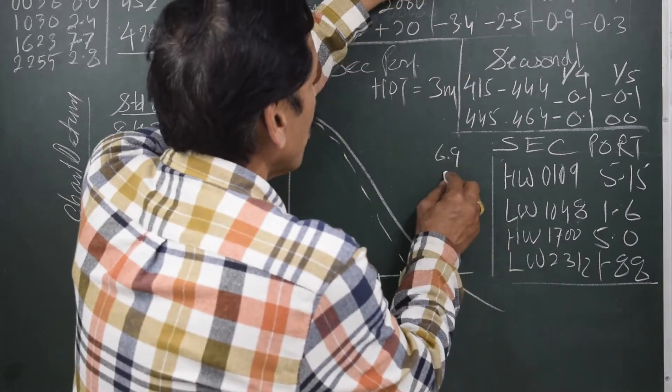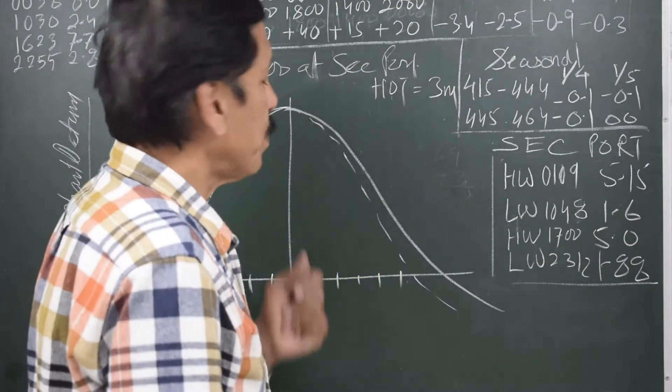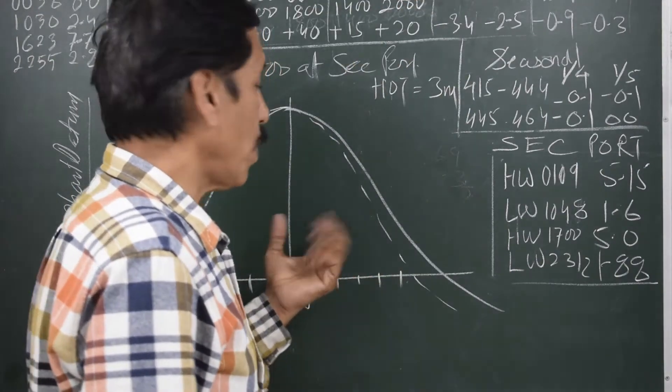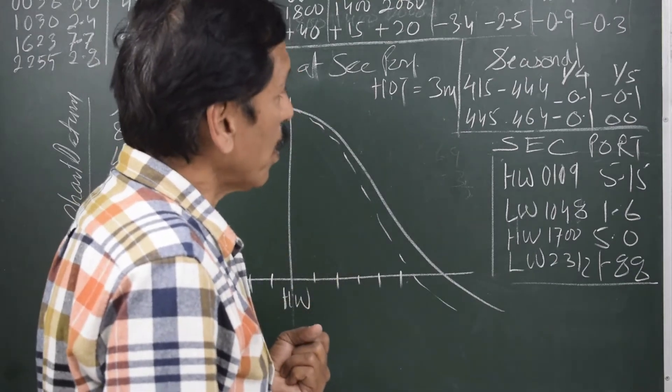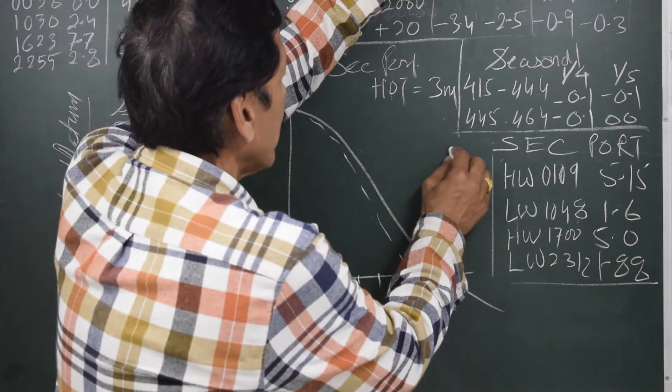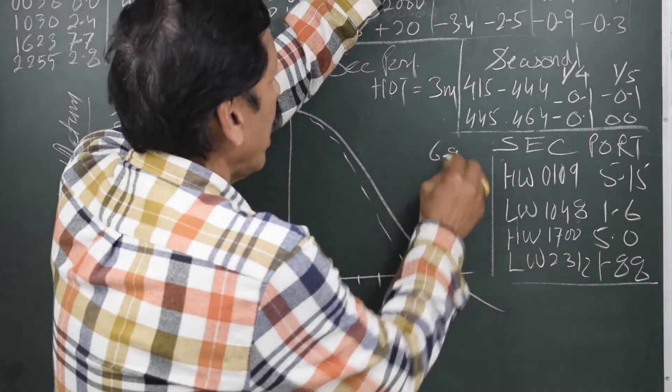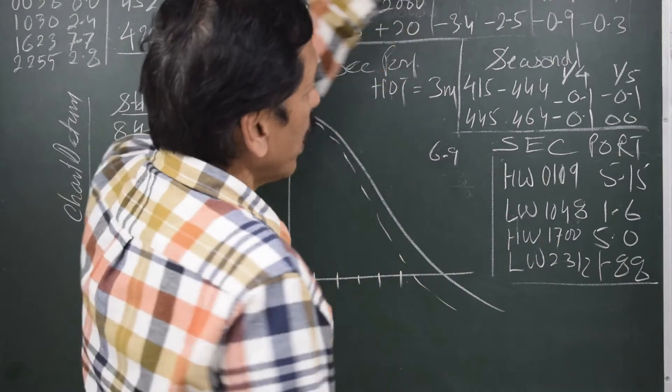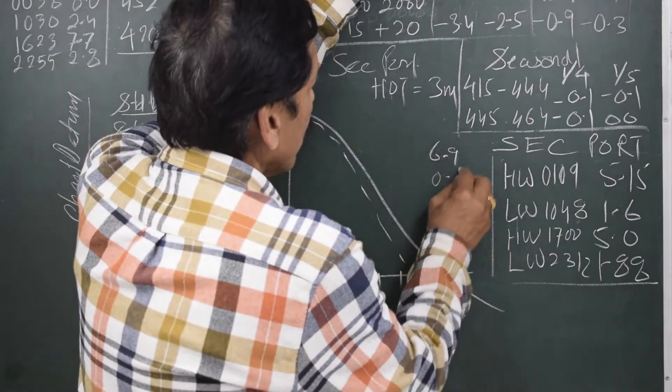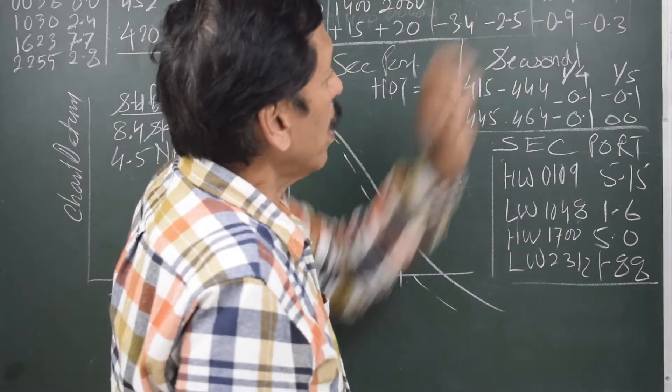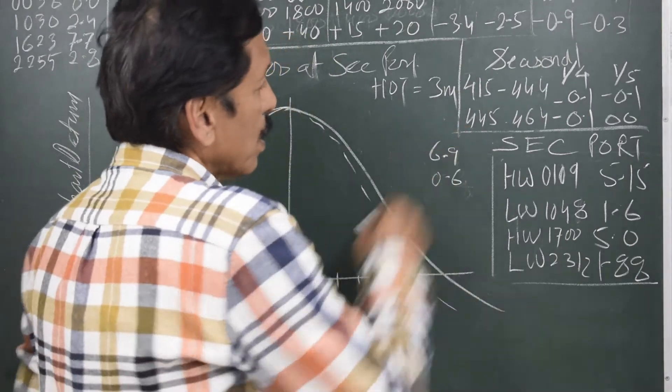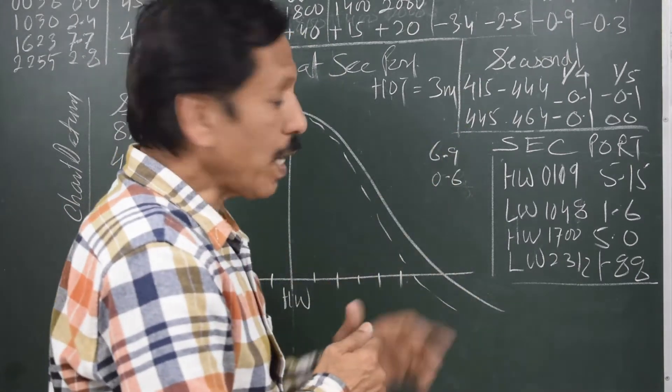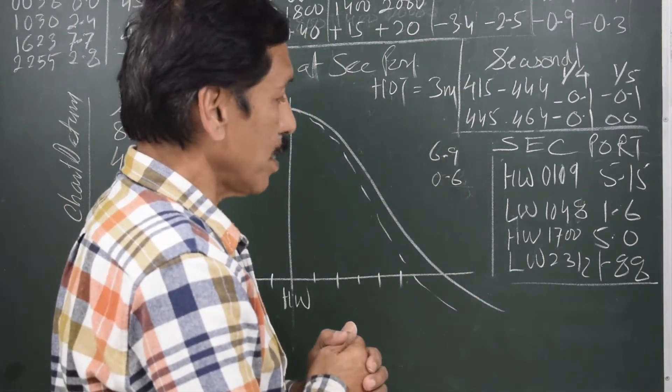But since we are going to use this curve for the secondary port, at secondary port mean high water spring is 6.9, that is the difference of this, and mean low water spring is 0.6, that is 0.9 minus 0.3. So this is the mean high water spring and mean low water spring at the secondary port. So the range of spring is 6.3.